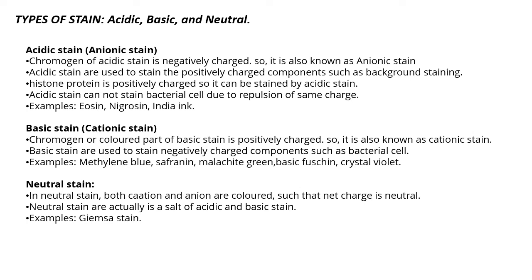Neutral stain is another type in which both cationic and anionic properties or charges are present, and they are combined such that the net charge is neutral. Neutral stains are actually salts of acidic and basic stains. An example is Giemsa stain.